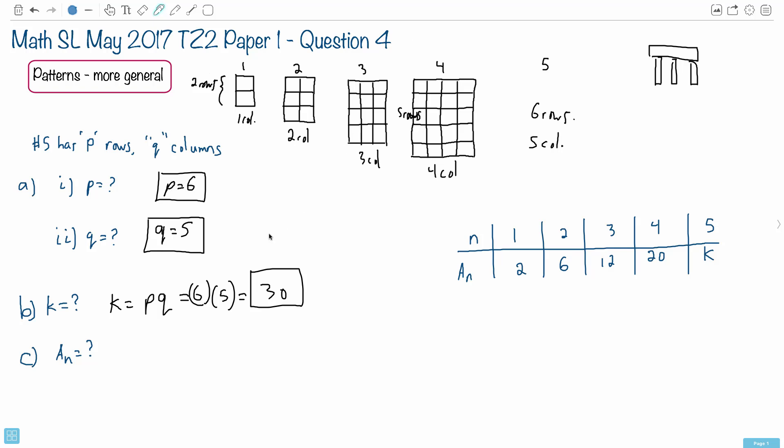All right, now we're getting more interesting. Now we're asked for the generic form for a_n. In other words, given what some value of n is, how do we find the area?